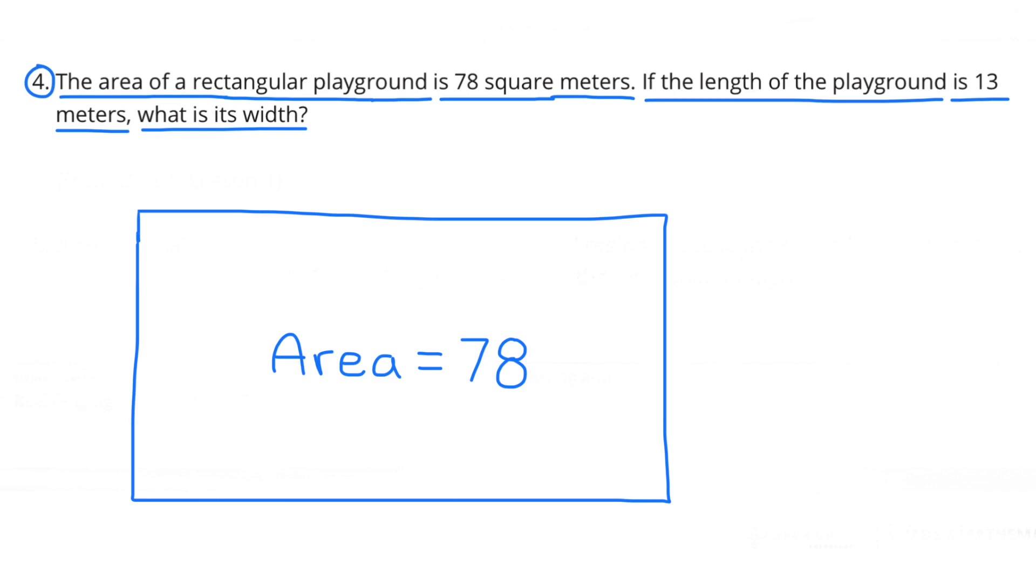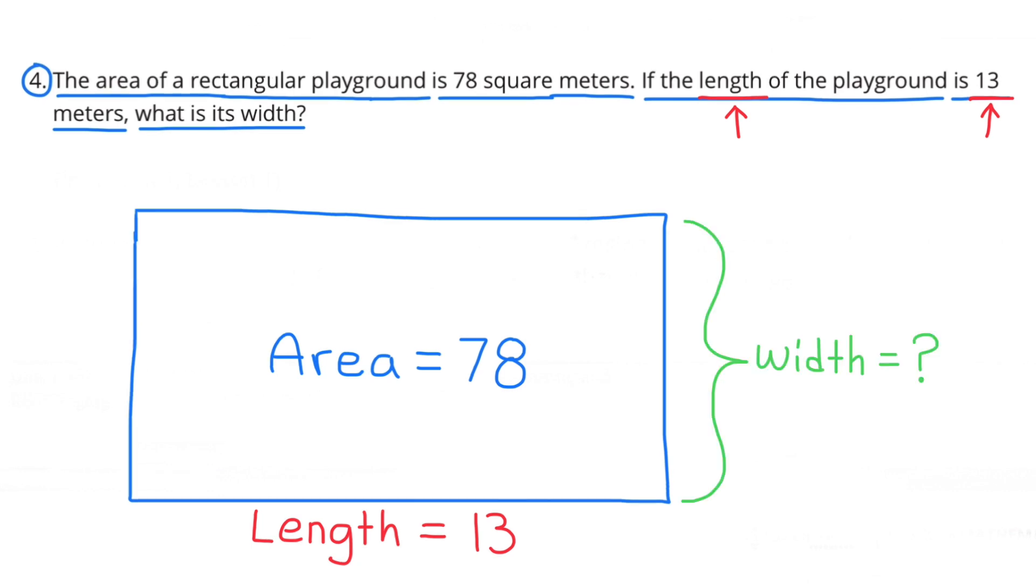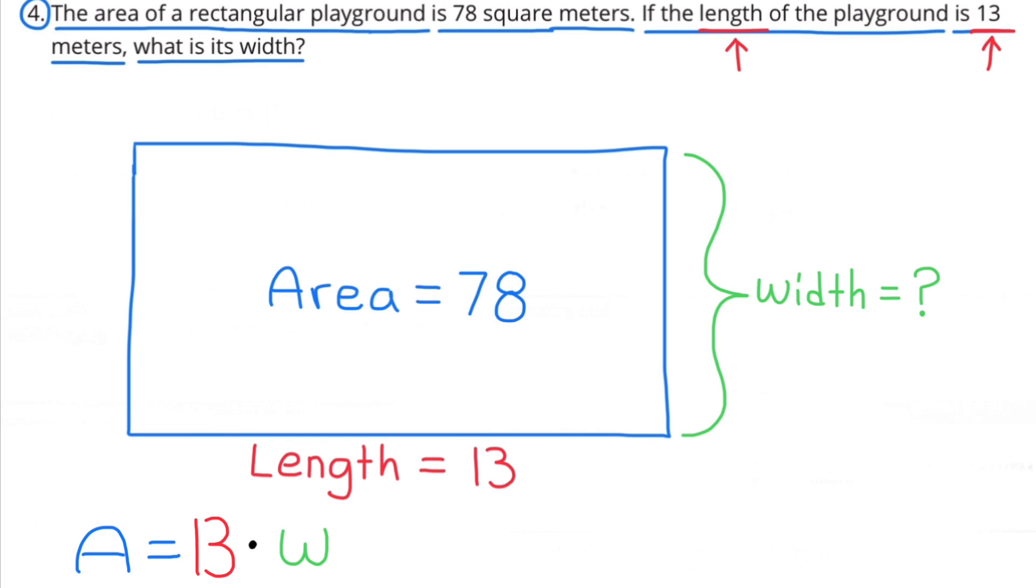Well, we know that the area is 78 meters, and we know that the length is 13 meters, but we don't know the width. We do know that the formula for the area of a rectangle is length times width. Since we know the length, we can plug in length as 13. The area equals 13 times the width.